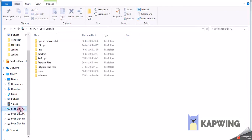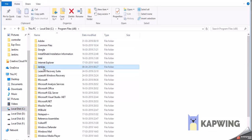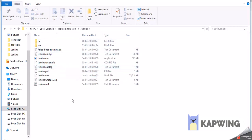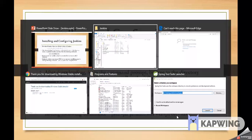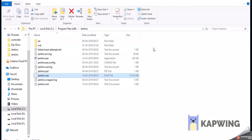Go to the Jenkins installed folder — Program Files, Jenkins folder. In this folder we can observe a file called jenkins.war. To execute this war file we use the command: java -jar jenkins.war. If we execute this command, the Jenkins server will start, extracting the war file with an embedded server. Since it defaults to port 8080, we need to change it by passing an extra key-value pair: --httpPort=8181. So the full command includes that parameter.